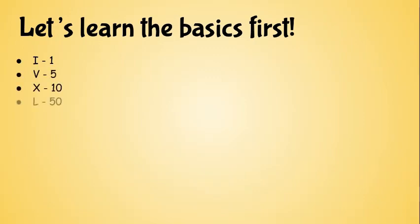X is 10, L is 50, C is 100, D is 500, M is 1000. And that's it. Those are the seven letters, or seven symbols, that make up the Roman numerals.